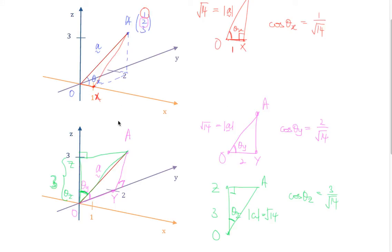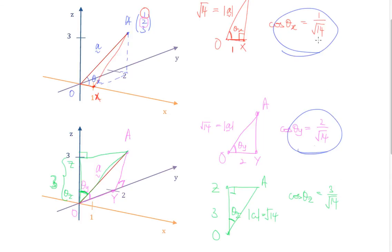Now you realize these three values all have the same denominator — √14 — which is the magnitude of the vector. And the numerators 1, 2, 3 are actually the coordinates — the x, the y, and the z coordinates of this vector to begin with.